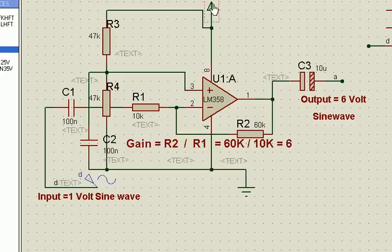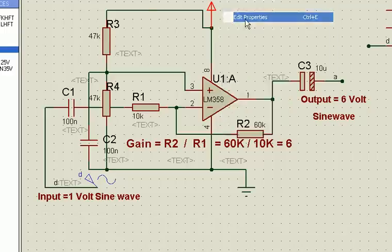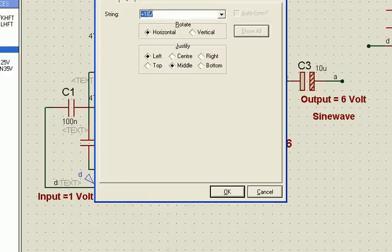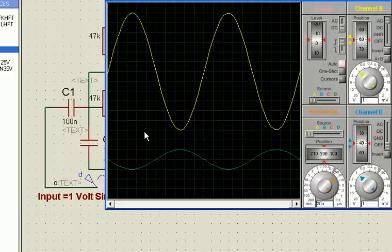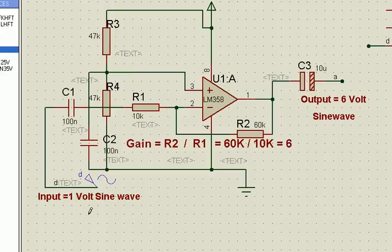Now the supply voltage is 18 volts. Supposing even if I change the supply voltage to 24 volts, the function still remains the same. Same gain, 1, 2, 3, 4, 5, 6. And this input is the same, 1 volt. Thank you.